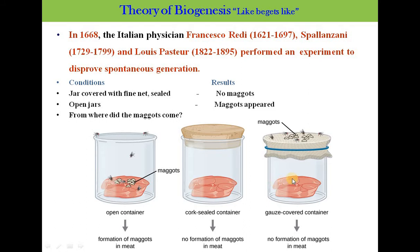and the third jar with a gauze or fine mesh cover. Flies laid their eggs on the meat in the open jar, and the eggs hatched into maggots and then young flies. Unable to reach the meat, flies laid their eggs on the gauze of the second jar, and the maggots hatched on the gauze, not in the meat. No eggs were laid on the cork-sealed jar, so it remained free of maggots.